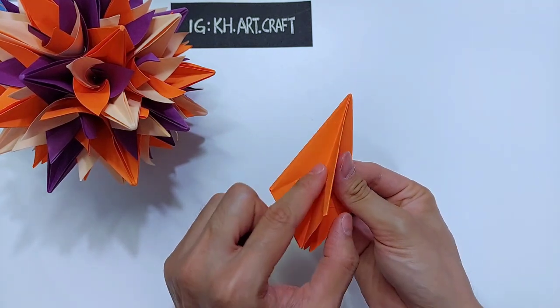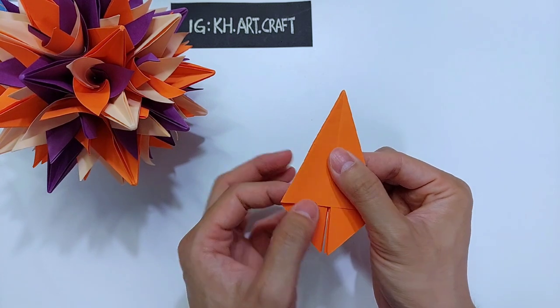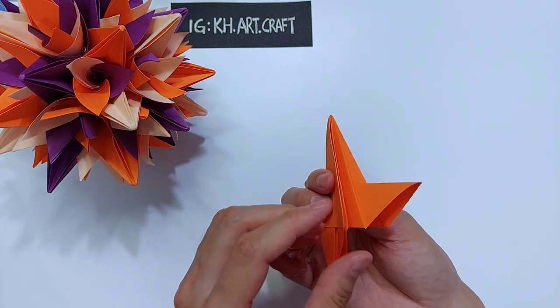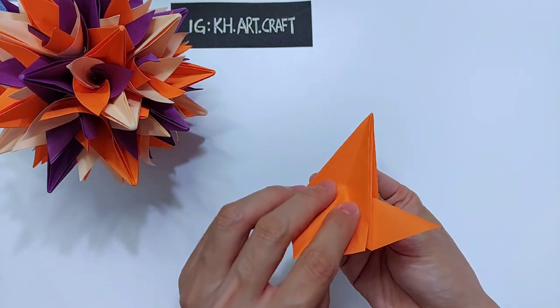From the fold that we just did, we can do a reverse fold. A reverse fold is to bring this flat out, and do it for all four sides.